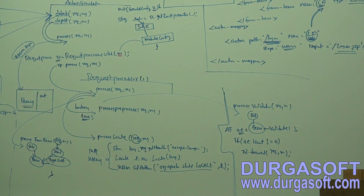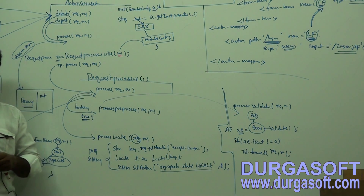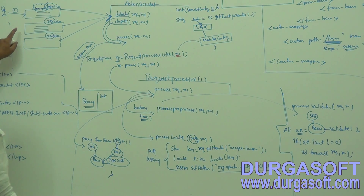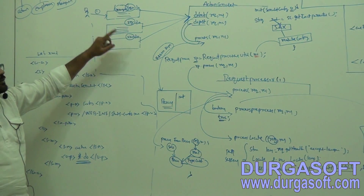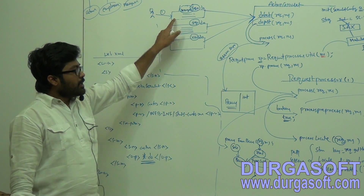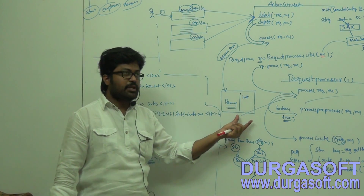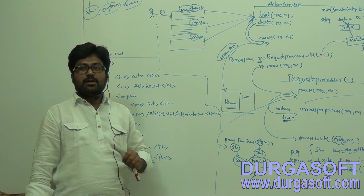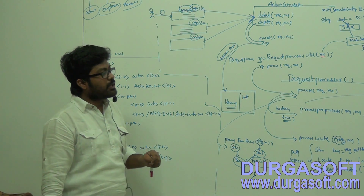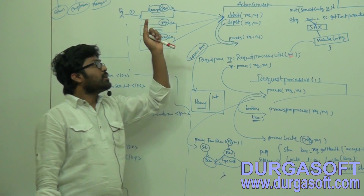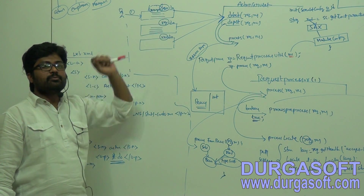Instead of using response.sendRedirect, internally it uses RequestDispatcher.forward. So using RequestDispatcher.forward, it will forward to the same login page. Whenever it forwards to the same login page, it will populate valid data from the bean. If it has any invalid data, that invalid data it will delete. Along with that invalid data deletion, it will also populate your ActionErrors object data on the same input form.